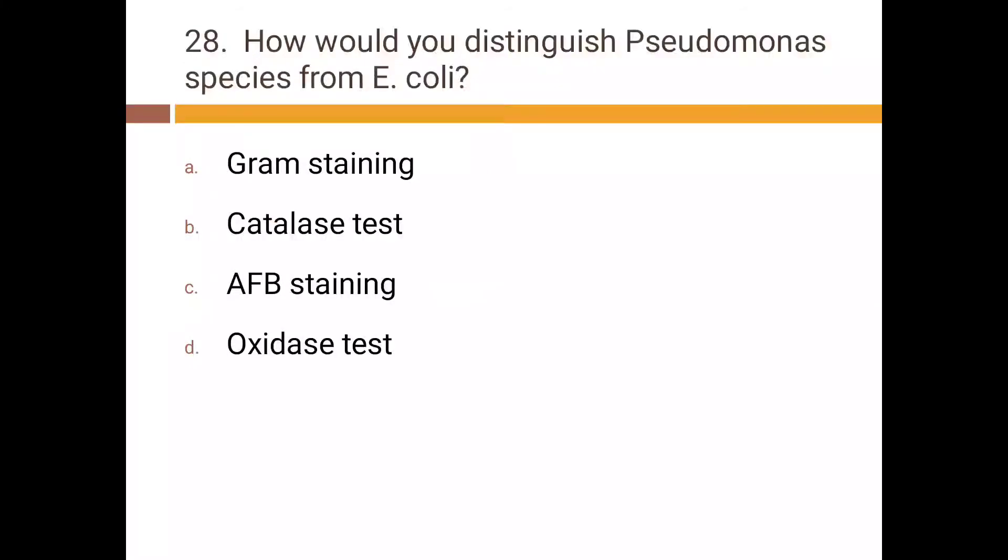How will you distinguish Pseudomonas species from E. coli: a) Gram staining, b) catalase test, c) AFB staining, d) oxidase test. Correct answer is d) oxidase test.